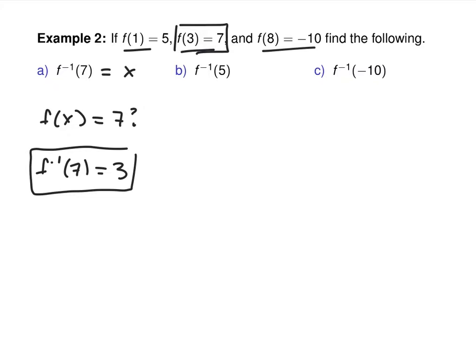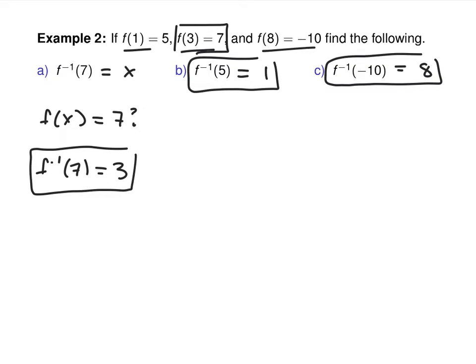What's f inverse of 5? It's 1. And f inverse of negative 10? That's 8. Some questions: if I gave you f inverse of 10, you'd have to say there's not enough information, because no information was given about when f equals 10. You can't assume it's negative 8 — you just don't know.